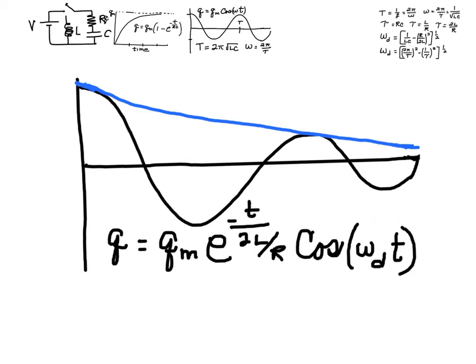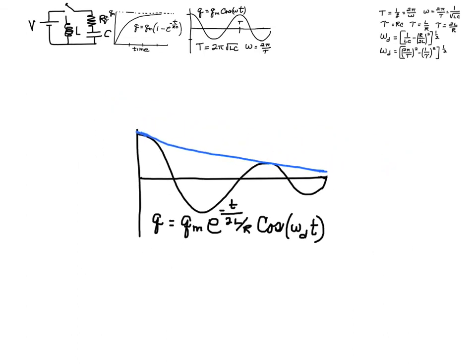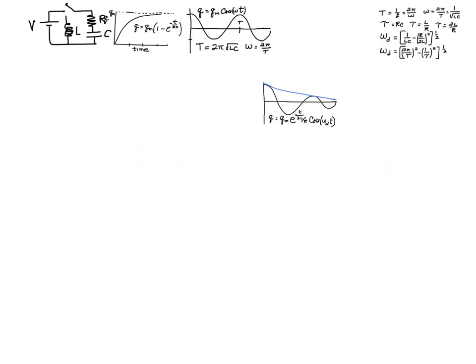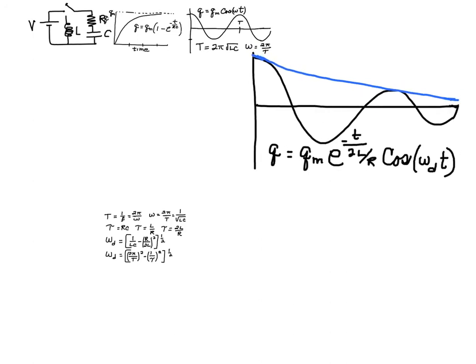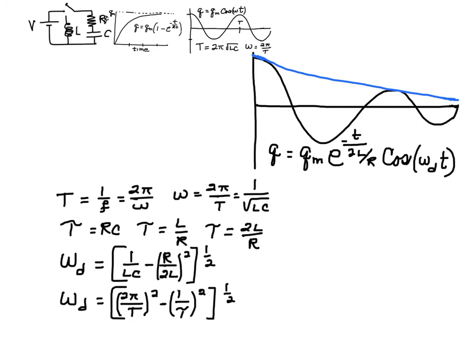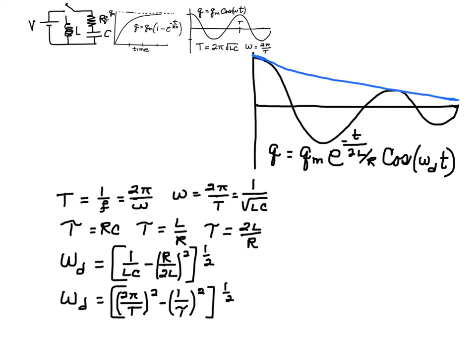Now, the time constant for the decay is slightly different from what we're used to. The time constant is 2L over R. And the angular frequency of the decay has a little ω. You'll see that on the equation sheet because the angular frequency is the damped angular frequency. So let's take a look at those equations. Let's bring those down and maybe I'll leave this a little bit expanded so we can see that. And we'll open up these equations.